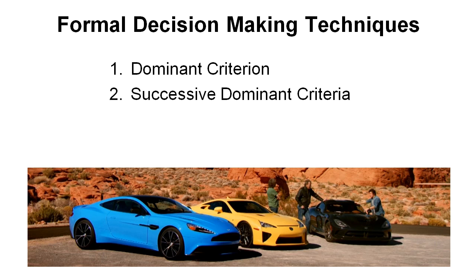The second method is the successive dominant criteria method. In this method we eliminate the worst option on the most dominant criteria, and then go and eliminate another option on the second most important criteria, and so on until we're left with just one option.